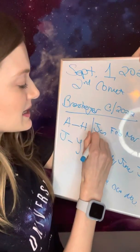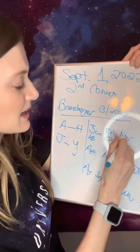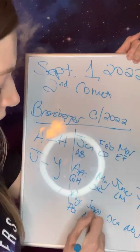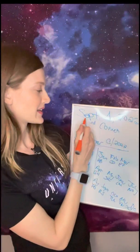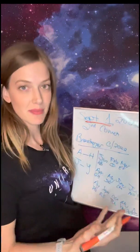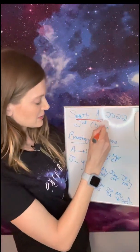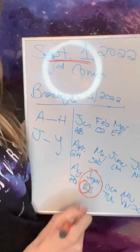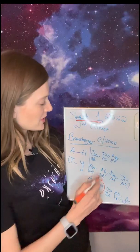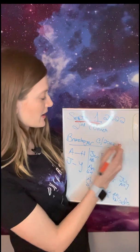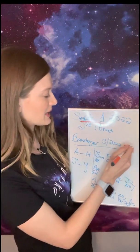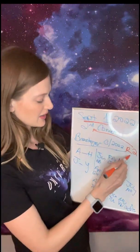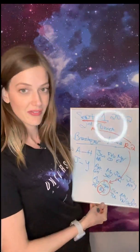Let's count through: January is A, B; February C, D; March E, F; April G, H; May J, K; June L, M; July N, O; August P, Q; September — the first half is letter 'R'. Since the comet was discovered on September 1st, that's the first half, so the letter is 'R'. The number is '2' because it was the second comet discovered.